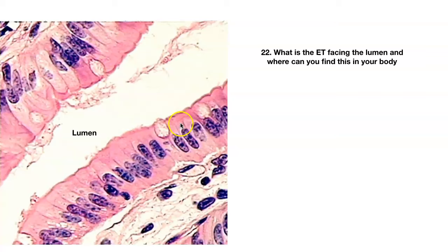Question twenty-two — what's this epithelium? You've already seen it once before. Simple columnar. Here's the basement membrane, here's the connective tissue layer. Long, elongated nuclei; here's a goblet cell. Simple columnar. Where do you find this? Stomach, small intestines, large intestines.